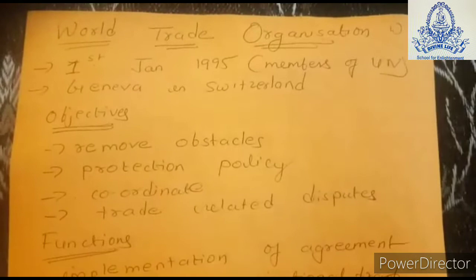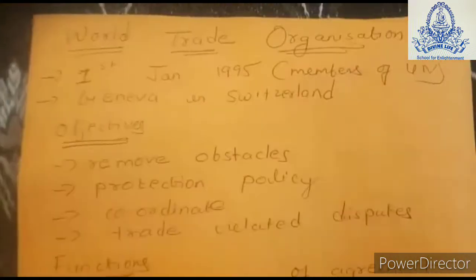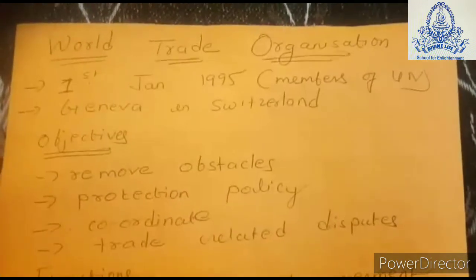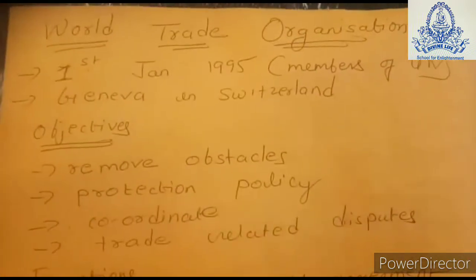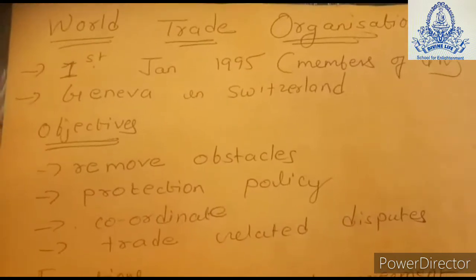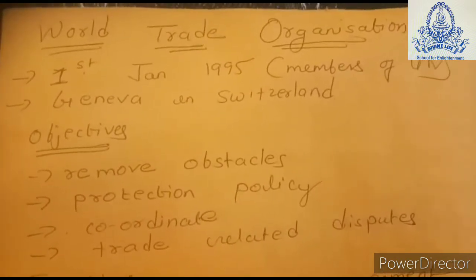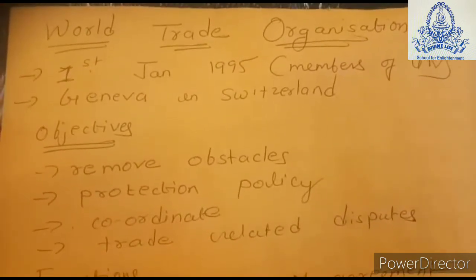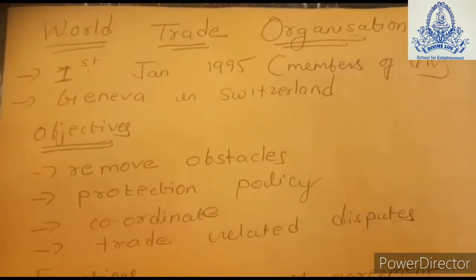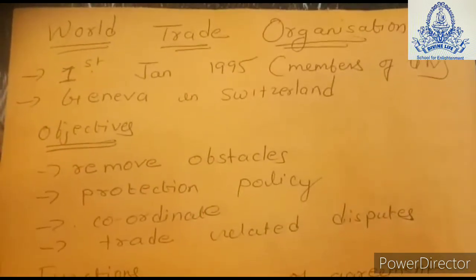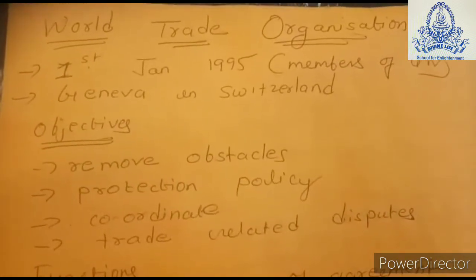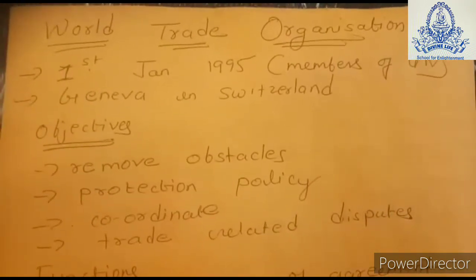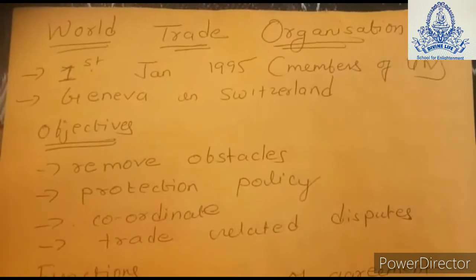Now let's see why the WTO was established — what were its objectives. First, to remove obstacles influencing global trading. Second, to remove the protection policy given to the industries of a country for foreign trade, so that there will be coordination with global trade policies and economical policies. Its main objective was also to solve trade-related disputes arising in the world.